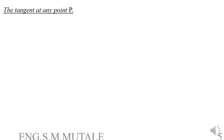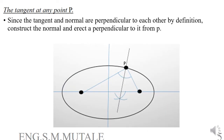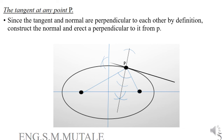To draw the tangent at any point P, note that the tangent and the normal are perpendicular to each other by definition. First construct the normal, then erect a perpendicular to it at point P. Strike arcs from P along the normal on both sides, then from those points strike intersecting arcs and draw a straight line through P. This line is the tangent to the ellipse.